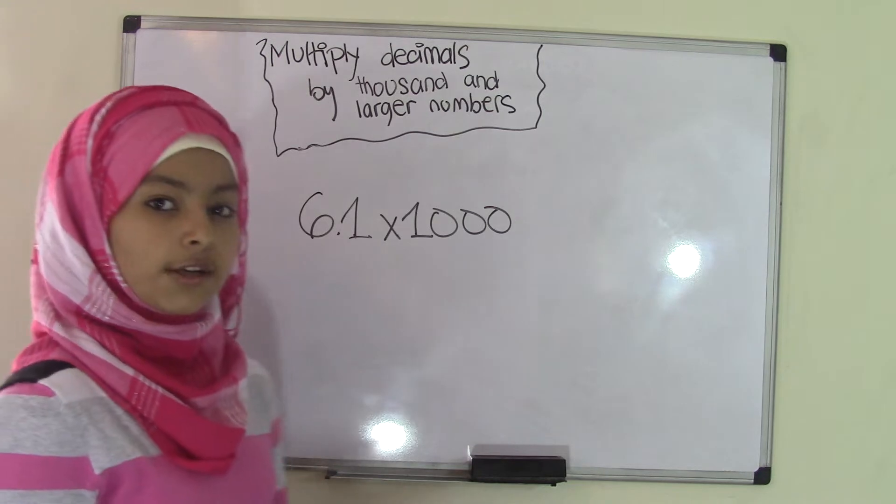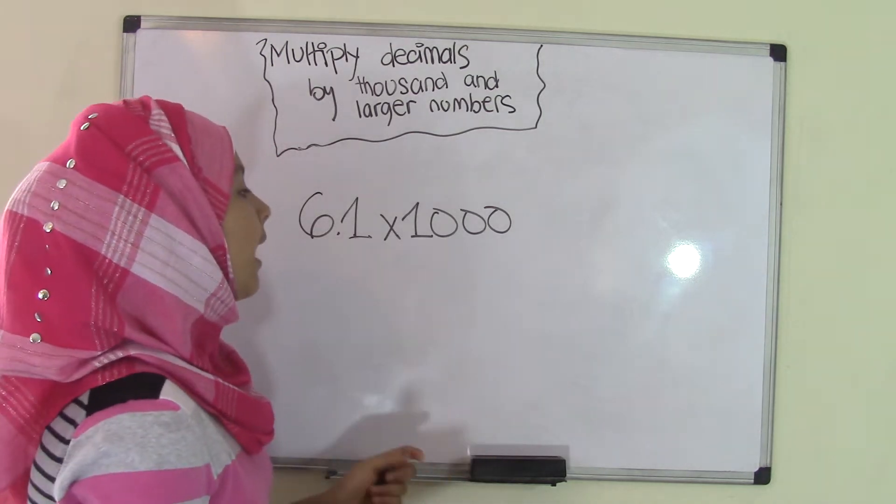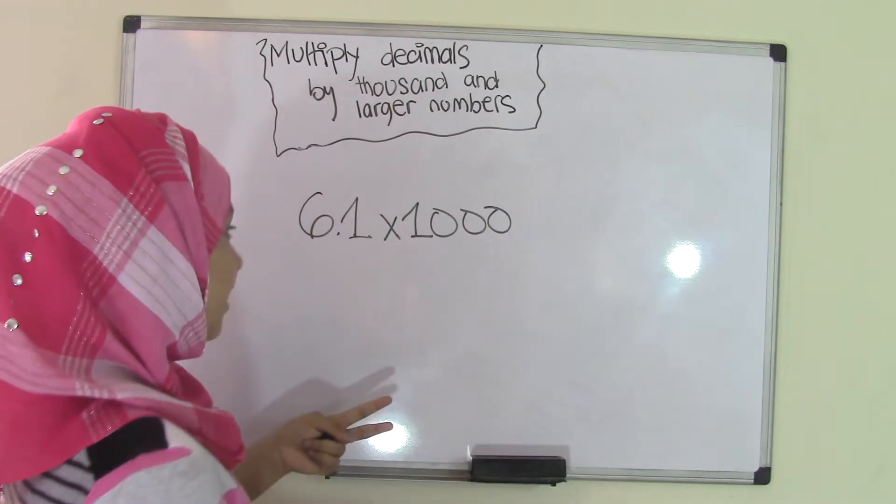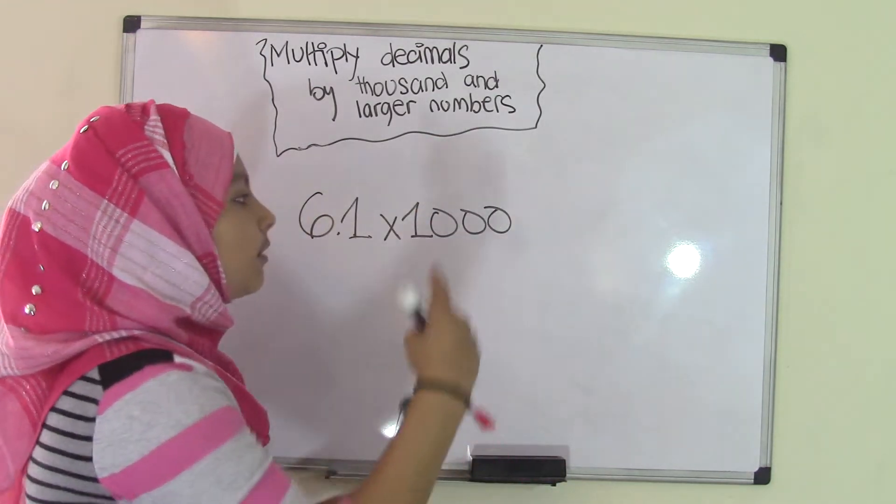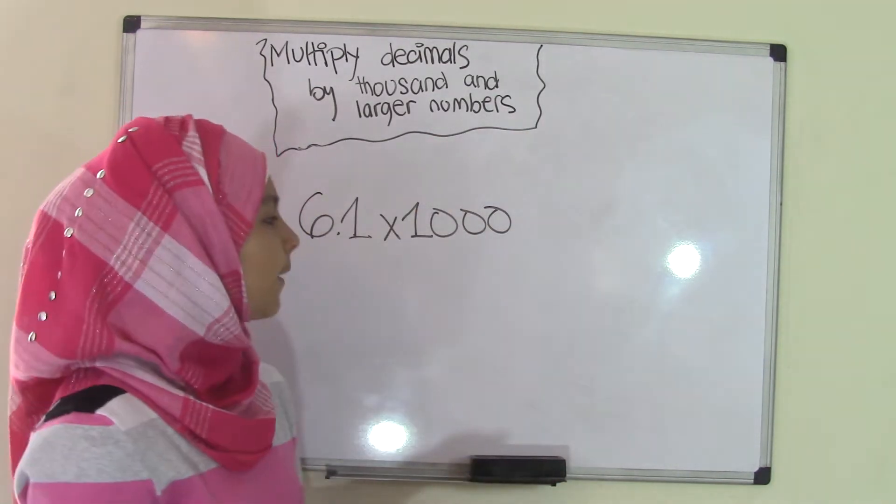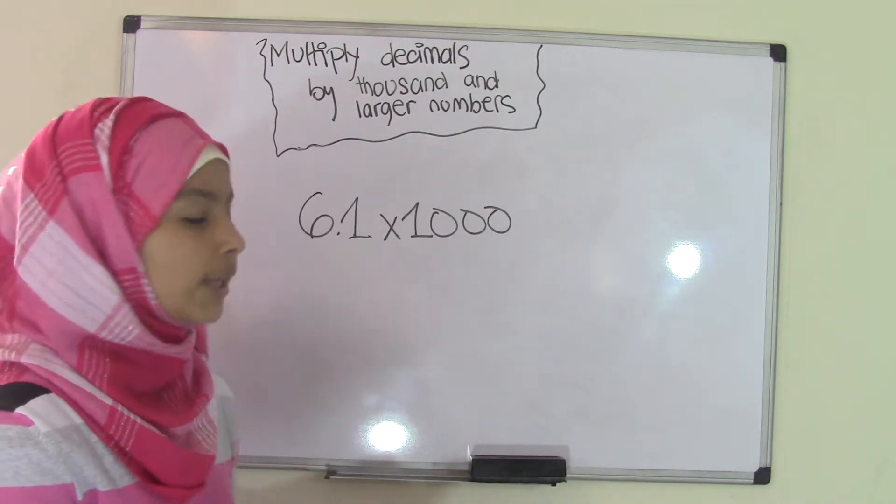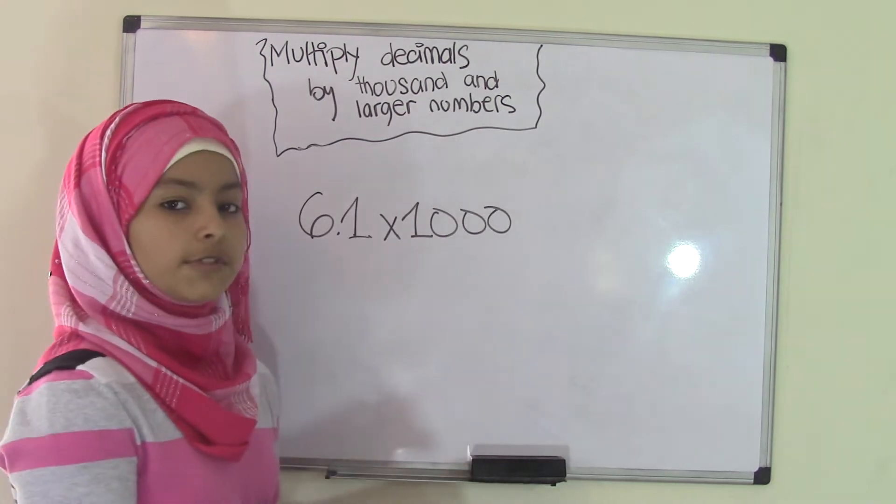If you've seen our previous video, we said that we don't really need to do the entire multiplication process in which we write it down and keep on doing it. That takes a long time, right? All you have to do to get the right answer, but it's more quick this way, is count the number of zeros.